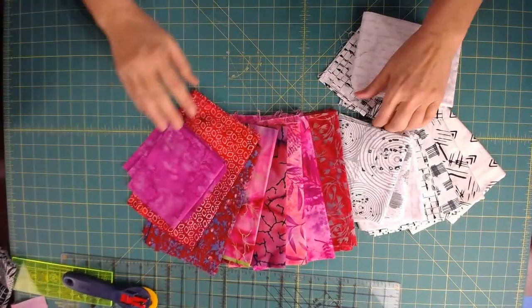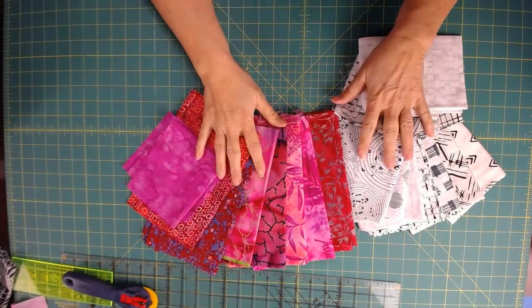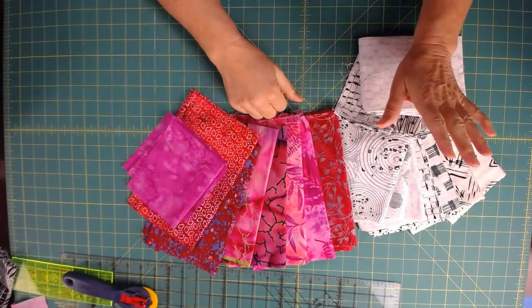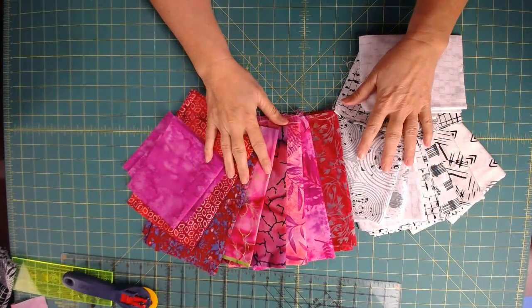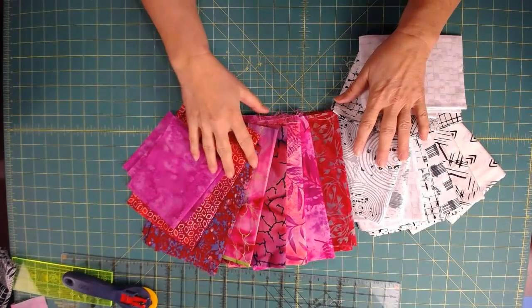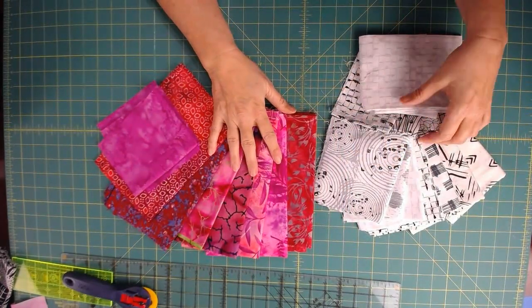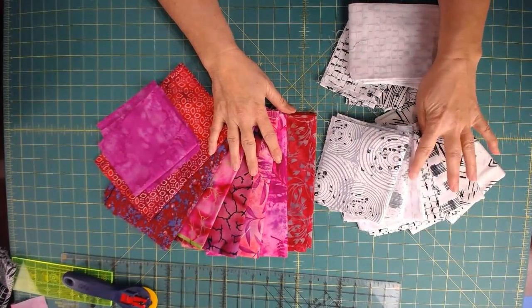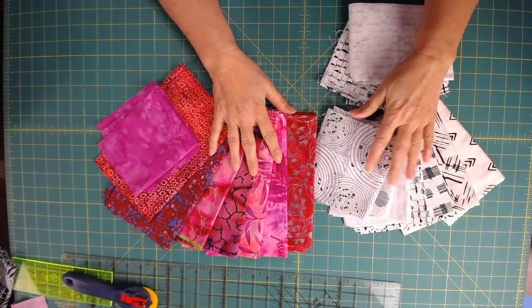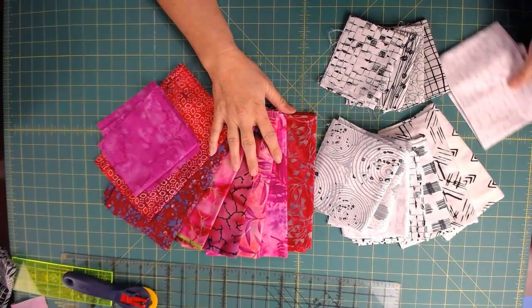This quilt will require four charm packs, or 84 of the focal fabric and 84 of the background fabric, and those are five-inch squares. I need a total of seven fat quarters in order to cut my five-inch squares that I need. You can see I have one, two, three, four, five, six, seven, and one of them has already been cut into, and I might not have enough, so I had this extra which matches.